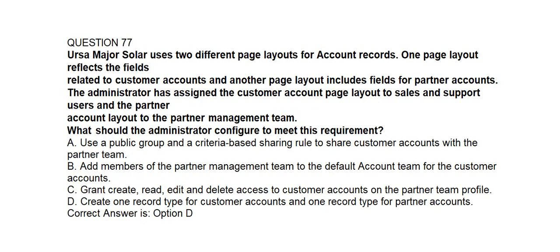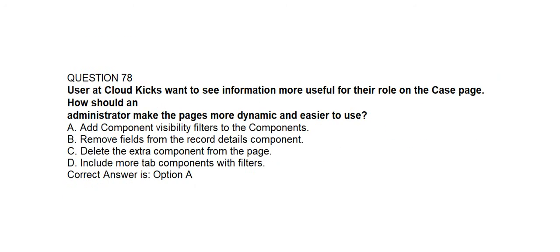Question number seventy-seven. URSA Major Solar uses two different page layouts for account records: one for customer accounts and another for partner accounts. The administrator has assigned the customer account page layout to sales and support users and the partner account layout to the partner management team. What should the administrator configure to meet this requirement? Option A: Use a public group and criteria-based sharing rule. Option B: Add members of the partner management team to the default account team. Option C: Grant create, read, edit, delete access on the partner team profile. Option D: Create one record type for customer accounts and one record type for partner accounts. Correct answer is Option D.